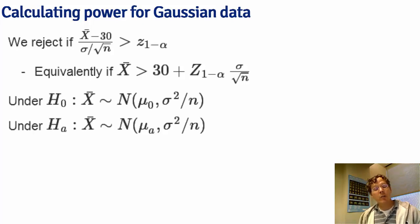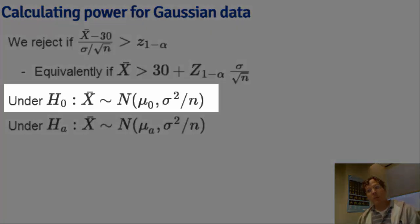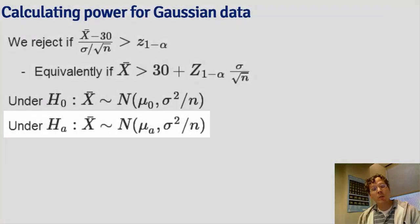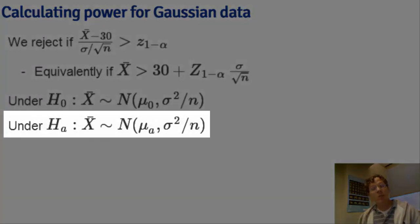Now notice, under the null hypothesis, x-bar follows this distribution: normal with a mean equal to mu-naught, in this case 30, and a variance equal to sigma squared over n. Under the alternative, it follows the same distribution. The only difference is instead of mu-naught, we have mu-a, where mu-a is the value under the alternative.